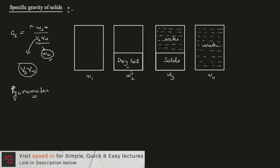We take a dry soil sample and we have four readings. The first reading is the empty pycnometer bottle. The second reading is the bottle filled with some dry soil. The third reading is with water filling the remaining volume with entrapped air removed. The fourth reading is the pycnometer completely filled with water. The weight of dry soil is simply W2 minus W1 — we just remove the weight of the container.